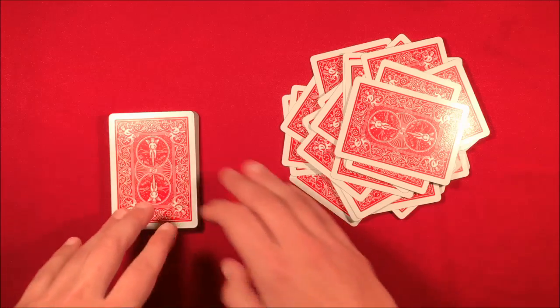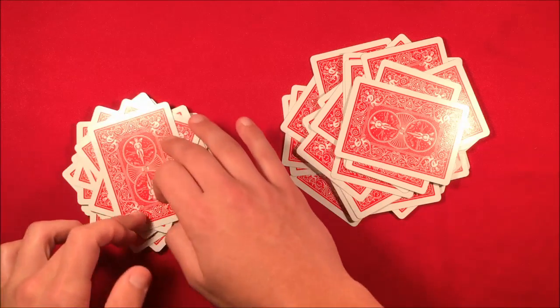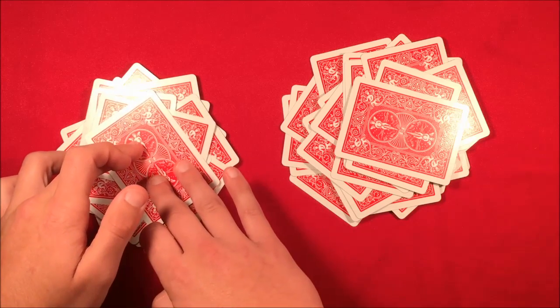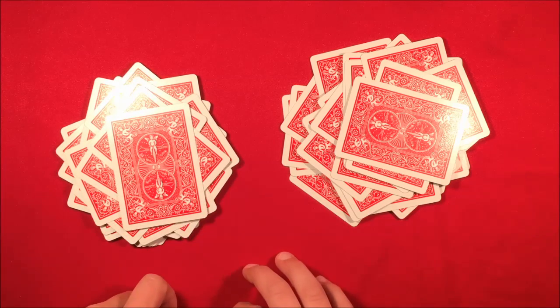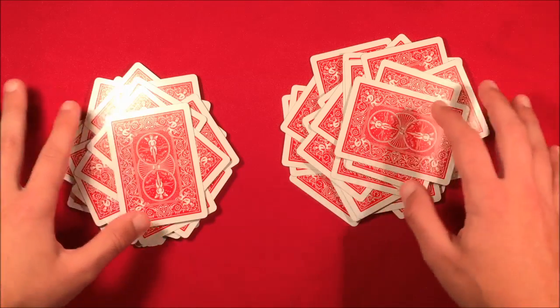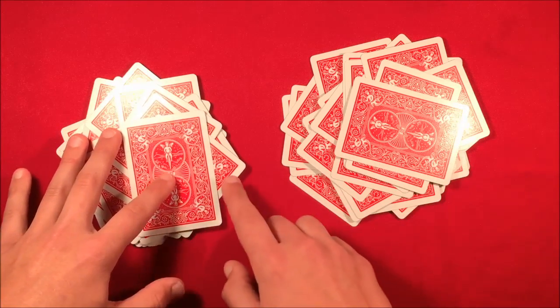Now in the left packet, what you want to do is twist it enough until you get the second card from the top protruding a little more than the rest. As you can see, I'm twisting it and here's the second card from the top. It's going to be very easy when I push these two packets together to be able to move that second card further out from the left deck.